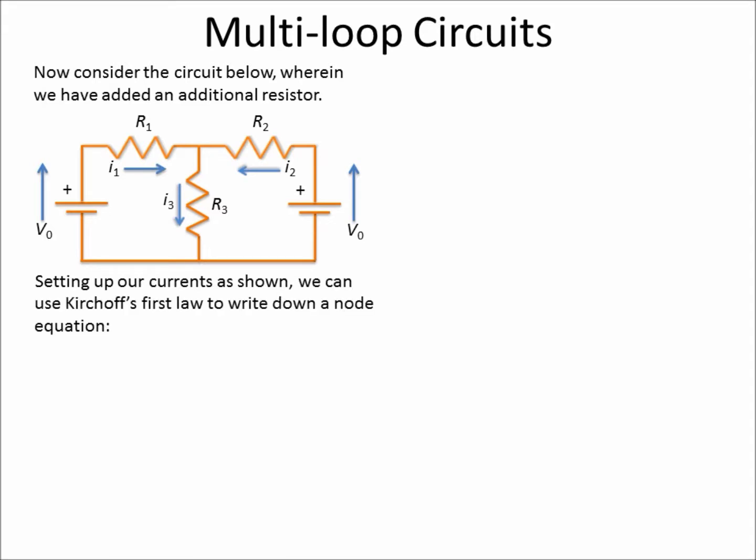From Kirchhoff's first law, the junction rule, we're going to see that I1 is equal to I2 plus I3. This says that the current coming into this little node here, all the electrons that come in have to come out. So it's just conservation of charge.